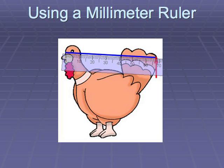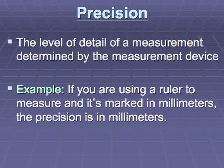If you use a millimeter ruler, your precision is millimeters. Now you can say that the turkey is between 67 and 68 millimeters. That's a little more precise than six and seven centimeters. So precision is the level of detail of a measurement, and it's determined by the measurement device.